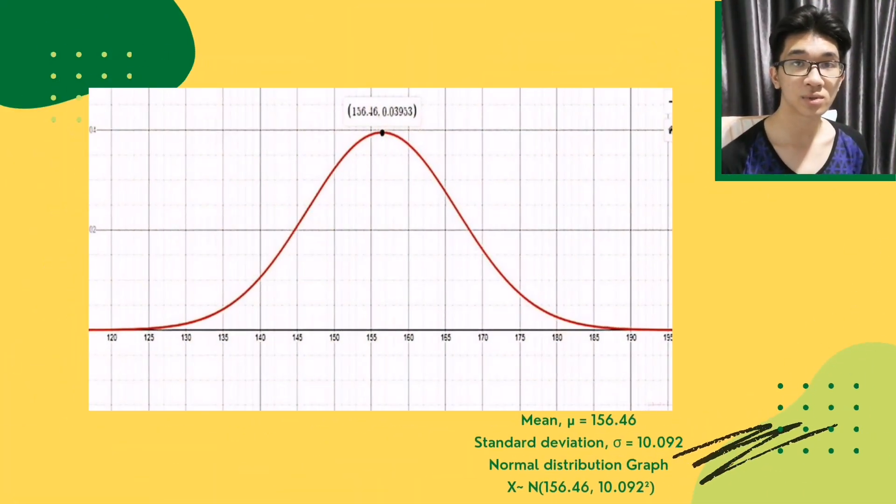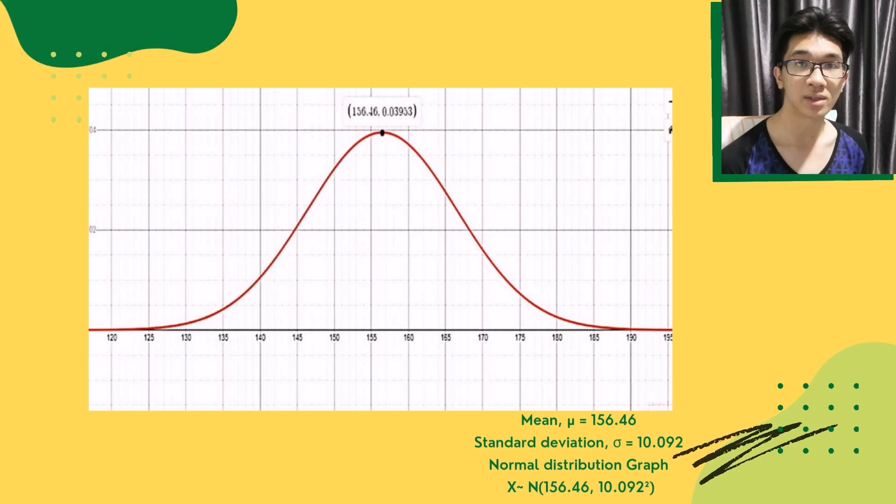Here is the normal distribution graph that we plotted using the mean value of 156.46 and the standard deviation of 10.092.